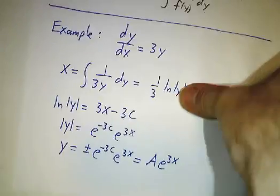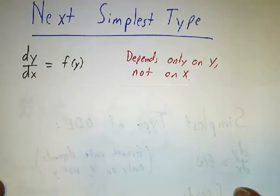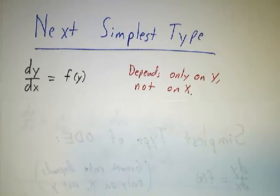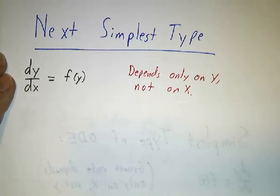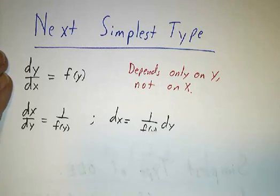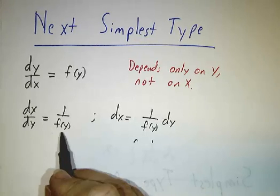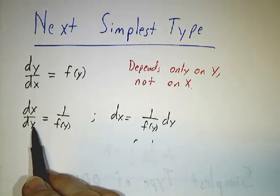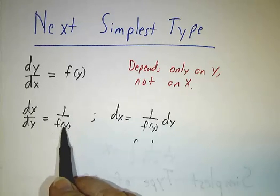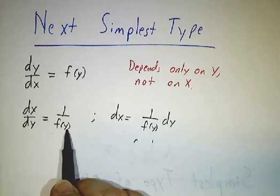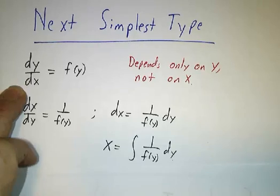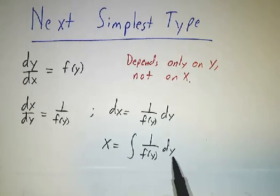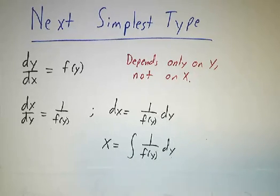Now the next simplest type of differential equation is where the derivative doesn't depend on x, but instead depends only on y. Usually in these situations, x is time. Now the way to solve that is to turn it upside down. The chain rule says that dx/dy is 1 over dy/dx, so dx/dy is 1 over f(y). Oh, now we think of it as x depending on y and the rate at which it depends on y, the rate at which it grows is only a function of y. So you multiply both sides by dy and you integrate. So in this case, you get that x is the integral of 1 over f(y) dy. And this will involve an arbitrary constant. And that won't involve shifting the curve up and down. That'll actually involve shifting the curve left and right.